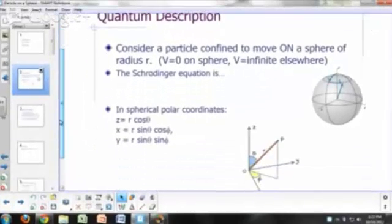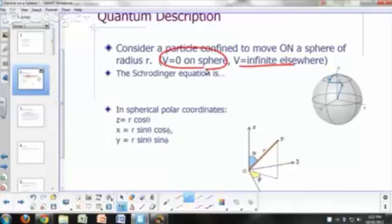Confine our particle to move on a sphere, on the surface of a sphere of radius r. So again, we're going to say potential energy is here on the sphere, infinite elsewhere.